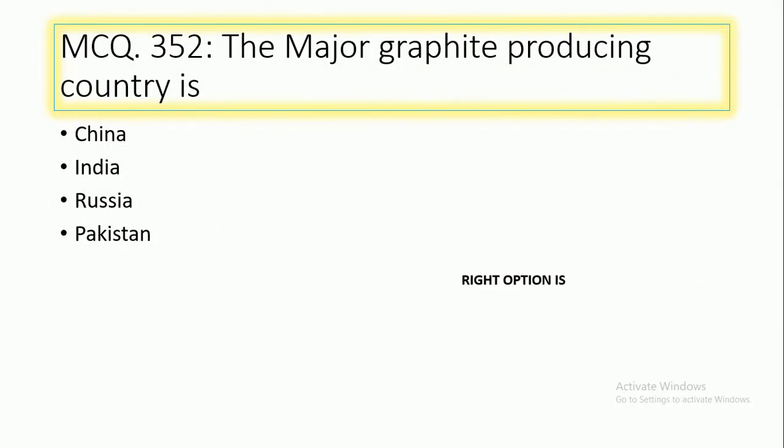MCQ number 352: The major graphite producing countries — China, India, Russia, or Pakistan? The right option is option number 2, China.